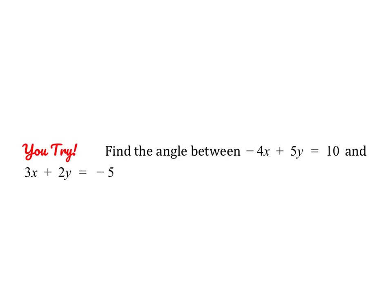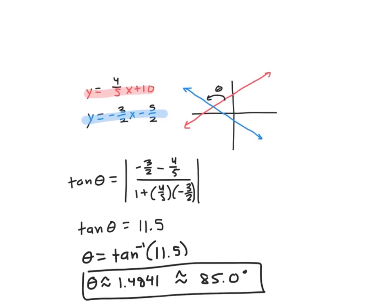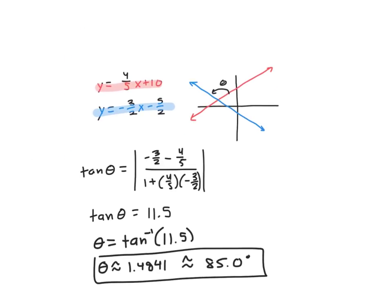Go ahead and pause the video and give this problem a try. The first line is graphed in red and the second in blue, and we want to find the angle from red to blue. The slope of our second equation is negative 3 halves, and the slope of the first is 4 fifths. Plug those into the formula, use arc tangent, and you should get roughly 1.4841, which is about 85.0 degrees.